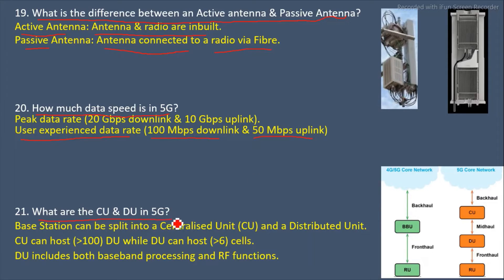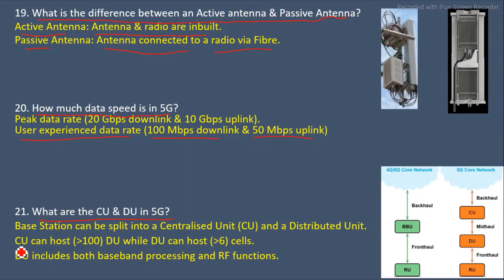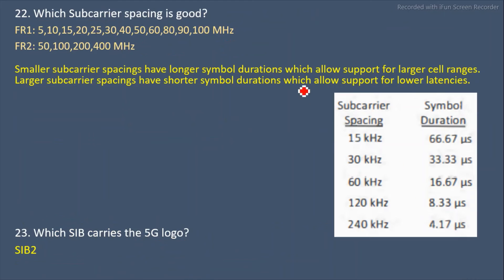Next question: What are the CU and DU in 5G? CU is the Centralized Unit and DU is the Distributed Unit. In 5G, the baseband unit (BBU) is divided into two parts: CU and DU. The radio unit remains the same, but the BBU is split. CU can host more than 1800 DUs, but a DU can host up to 6 cells at one time. DU includes both baseband processing and RF functions.